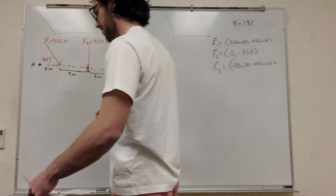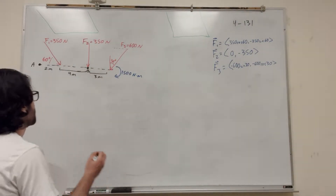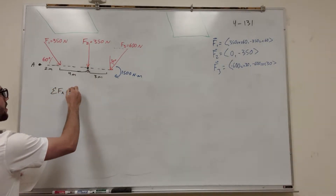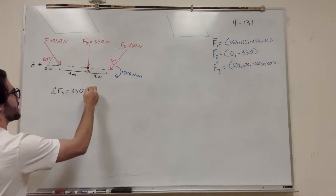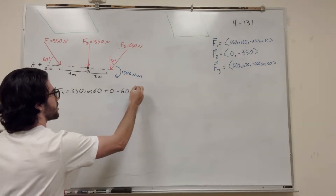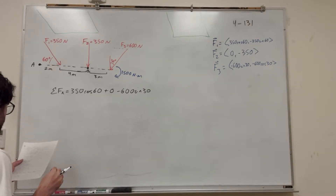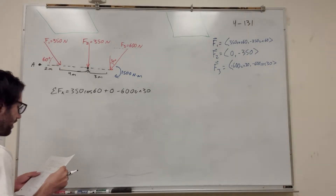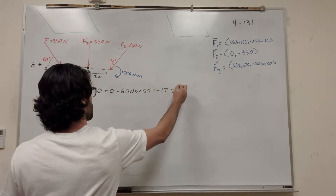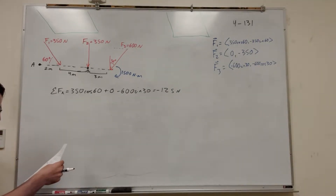Now let's sum these up. Starting in the x-direction: the sum of forces in x equals 350 cosine(60) plus 0 minus 600 sine(30). That comes out to negative 125 units.